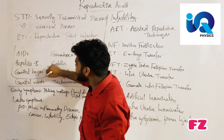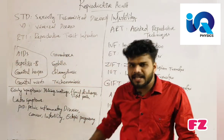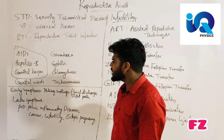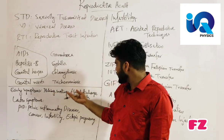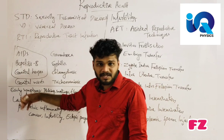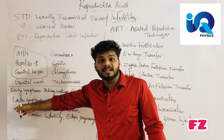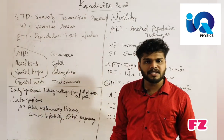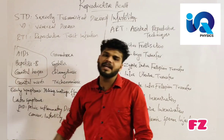Among STDs, AIDS, Hepatitis B, and Genital Herpes are incurable. The others are curable. Early symptoms include swelling, fluid discharge, and slight pain. Later symptoms include PID — Pelvic Inflammatory Disease — cancer, infertility, and ectopic pregnancy.